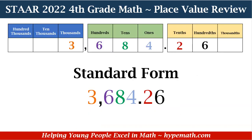Let's review once again about place value — we are talking about whole numbers and decimals. In our example, we have 3,684 and 26 hundredths. Did y'all hear the 'THS' at the end? If you look at our place value chart, we have a 3 in the thousands place, a 6 in the hundreds place, an 8 in the tens place, a 4 in the ones place, a 2 in the tenths place, and a 6 in the hundredths place.